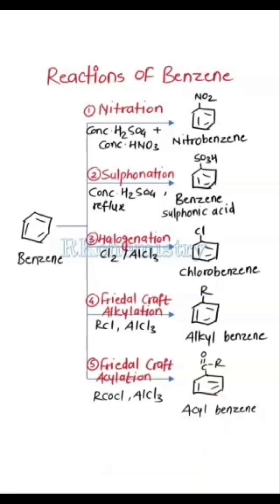Third reaction is halogenation. Cl2 in presence of AlCl3 is used, and we get chlorobenzene.